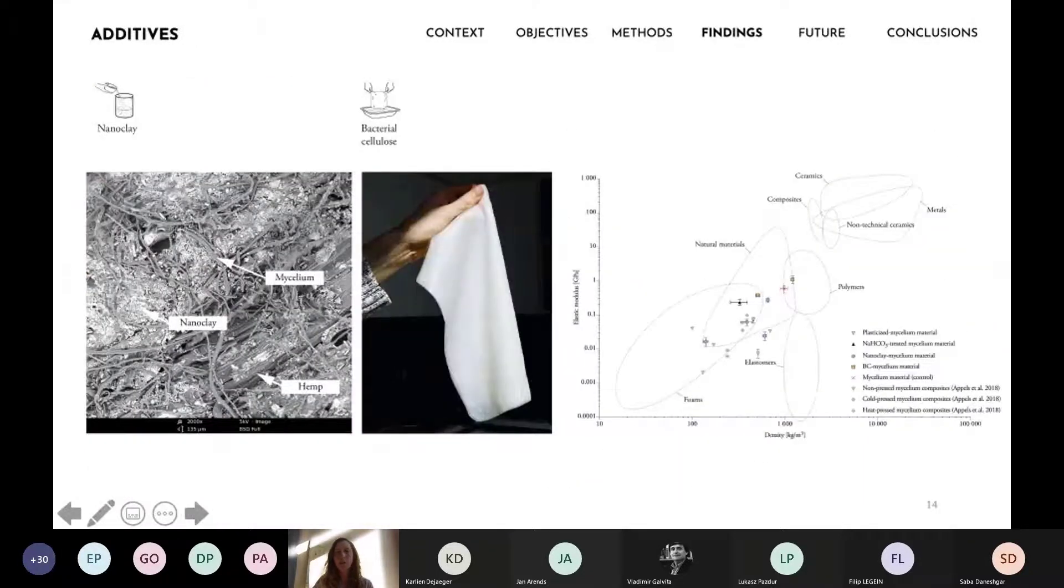A key aspect of improving mechanical properties is the implementation of nanoparticles. Two core approaches were tested using nanoclay and bacterial cellulose to achieve enhanced properties.